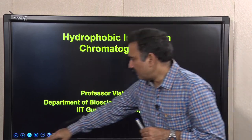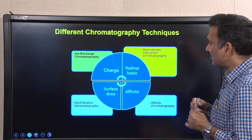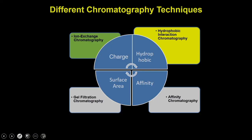If you recall, what we said is that proteins have different physicochemical properties, and all these physicochemical properties can be exploited in different chromatography techniques. We discussed how the charge present on the protein can be utilized to perform ion exchange chromatography. Now in today's lecture, we are going to discuss hydrophobic interaction chromatography, which utilizes the hydrophobic patches present on the protein surfaces.